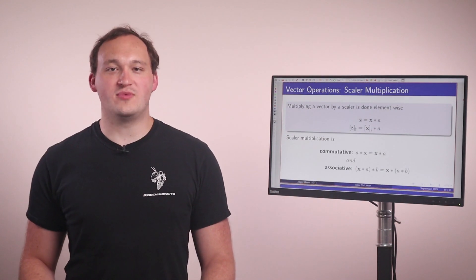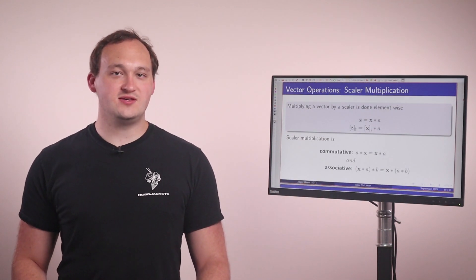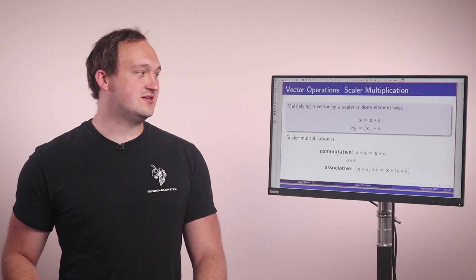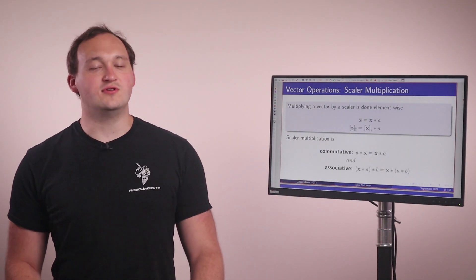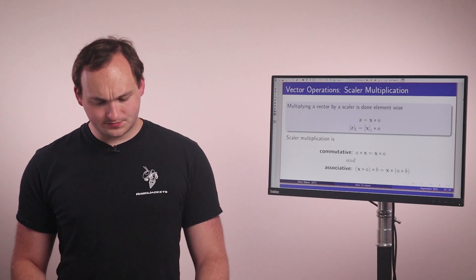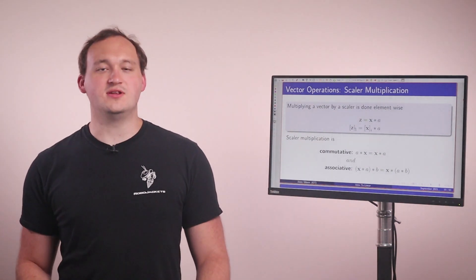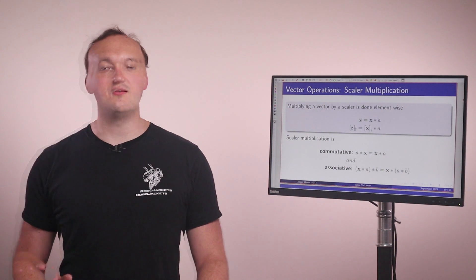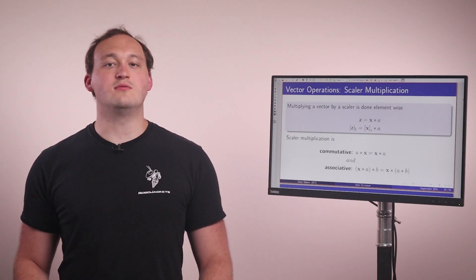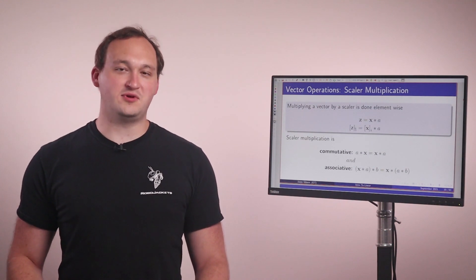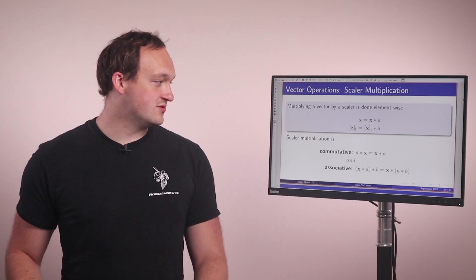So we can multiply a vector by a scalar, and that is done element-wise. So for each element in the vector x, we would multiply it by some scalar a, and you can see that by how we're denoting with the subscripts. So scalar multiplication is commutative, which means that a times the vector x is equal to x times the vector a, or associative, we can multiply two scalars together and then multiply by a vector, or multiply by a vector and then two scalars.